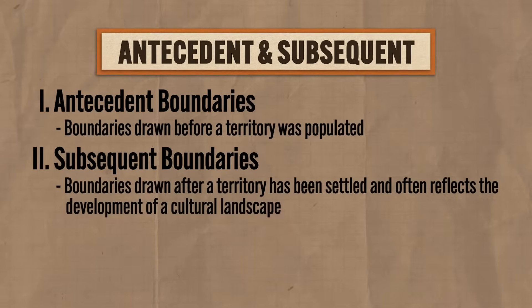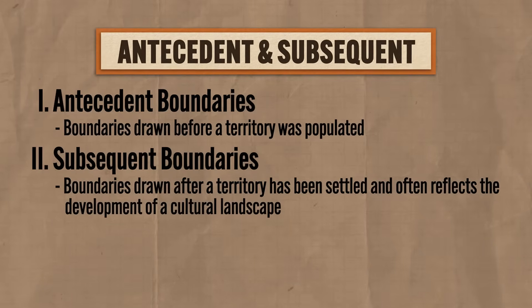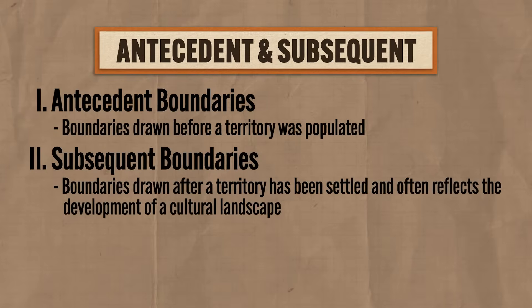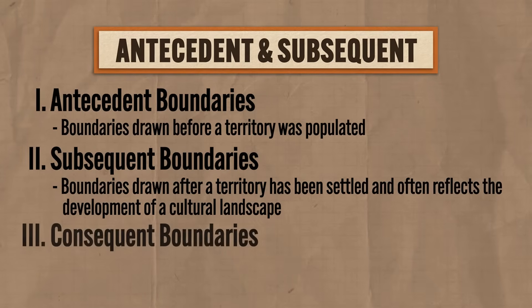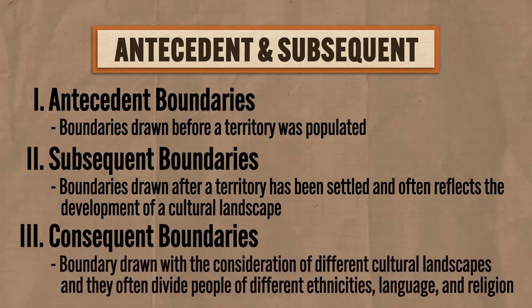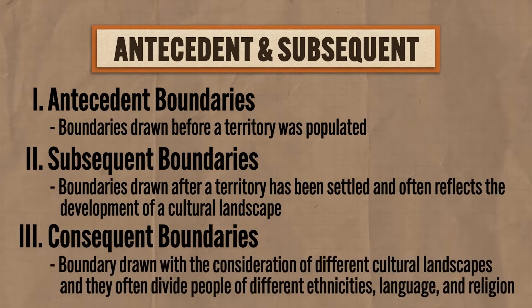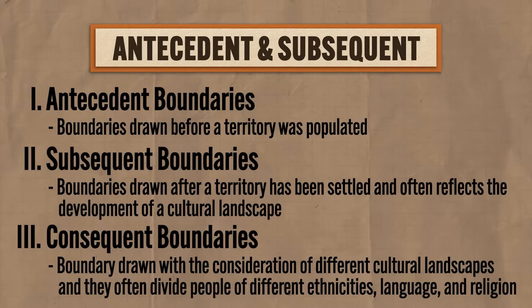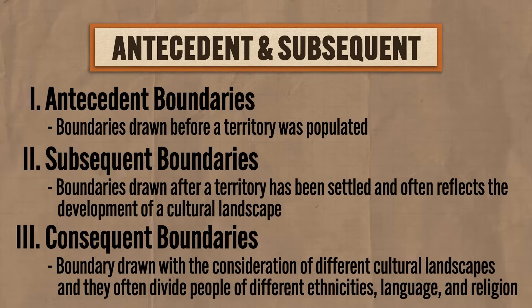A third type of boundary you need to know is actually a kind of subtype of subsequent boundaries, and it's known as a consequent boundary. This kind of boundary is drawn with the consideration of different cultural landscapes, and they often divide people of different ethnicities, language, and religion.